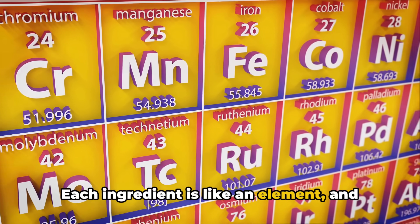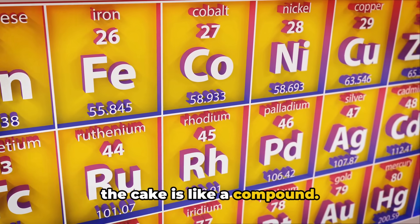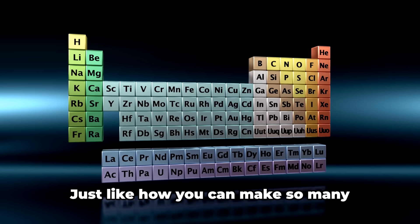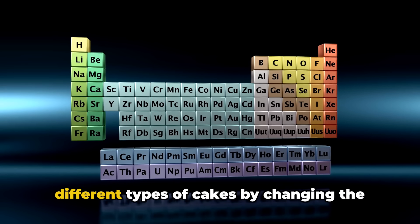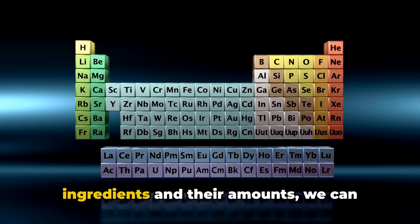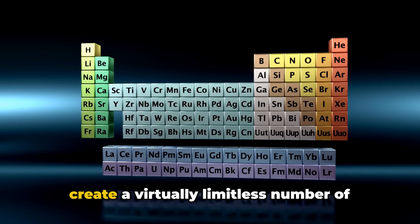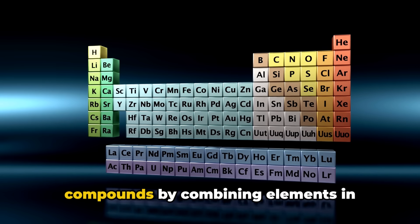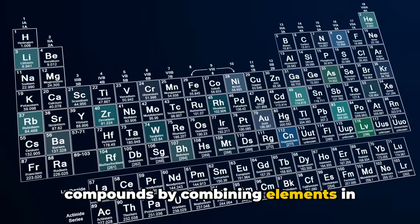Each ingredient is like an element, and the cake is like a compound. But here's the exciting part. Just like how you can make so many different types of cakes by changing the ingredients and their amounts, we can create a virtually limitless number of compounds by combining elements in different ways.